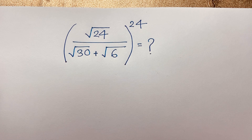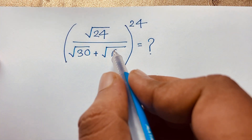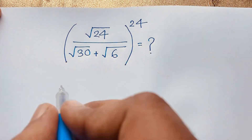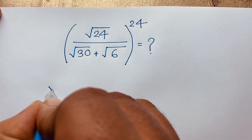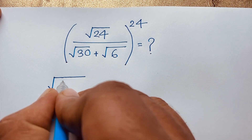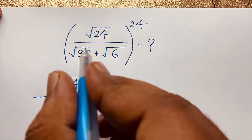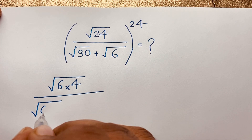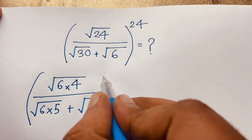Hello everyone. How to solve this radical math question: square root of 24 over square root of 30 plus square root of 6, whole to the power 24, is equal to what? This is an interesting radical math question, so let's start. Square root of 24 equals square root of 6 times 4. Square root of 30 equals square root of 6 times 5, plus square root of 6, whole to the power 24.